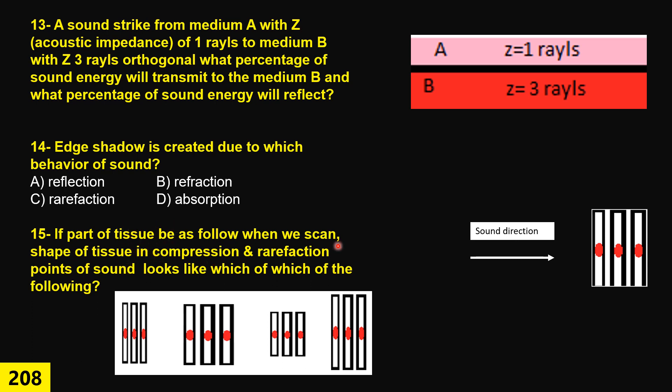Question 15. We have soft tissue. Imagine they are cells, tissue, soft tissue, cells, and sound beam this way, hitting that way. This is at the cellular level. So what happens during compression and rarefaction on the tissue? The shape of those cells become like this, this, this, or this. We have to mention in each of those spots, compression and rarefaction.